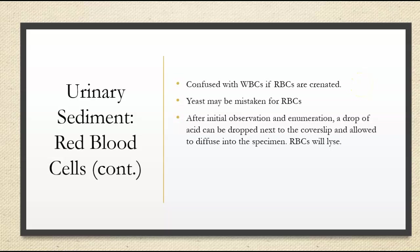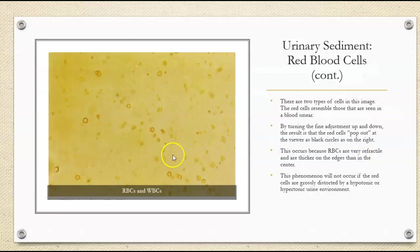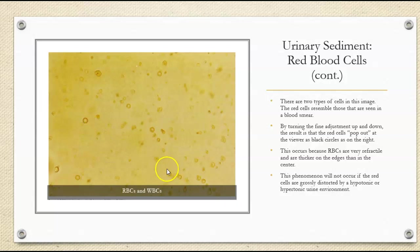Yeast can often be mistaken for red cells. After initial observation and enumeration, we can actually put a drop of acid to lyse the red cells, so we can confirm the presence or absence of yeast. Here are your typical donut-looking red blood cells. These are the typical cells that we see in a blood smear, and as you focus, they will seem to pop out and have darker circles around them — they look a little more refractile because they're thicker on the edges. This won't occur if the red cells are distorted by hypotonic or hypertonic urine environments.